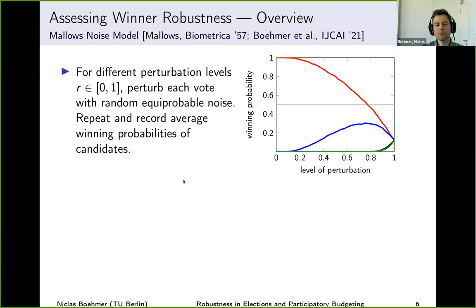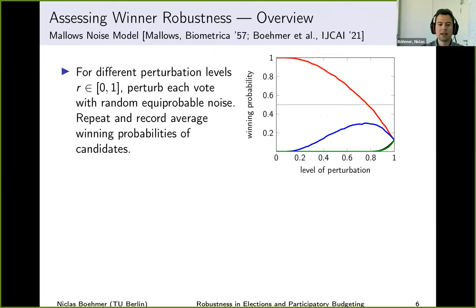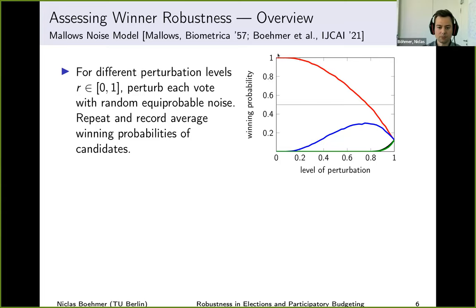In our experiments, we assess the robustness of real-world election winners using established noise models. The Mallows noise model uses a global parameter you can think of as a perturbation level. We go through the votes one by one and perturb each using this Mallows noise model — making some random number of swaps proportional to the parameter. We do this for all votes, look at the winner, and repeat 10,000 times, recording the average winning probabilities of the candidates.